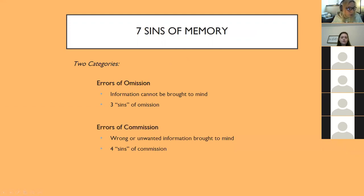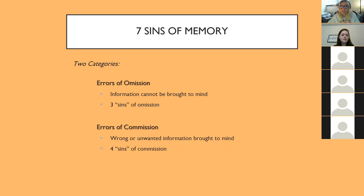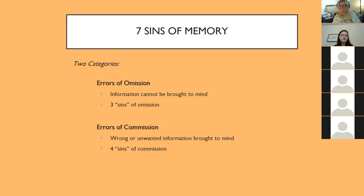I'm going to go through what's called the seven sins of memory — errors that can occur when trying to accurately remember and recall information. There are two categories: errors of omission, where information cannot be brought to mind, and errors of commission, where wrong or unwanted information is added or brought to mind. We'll talk about three types of errors of omission and four types of errors of commission.